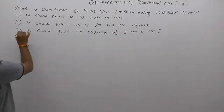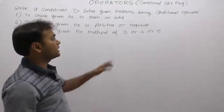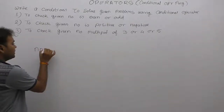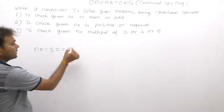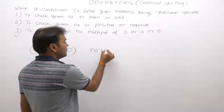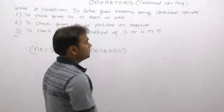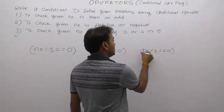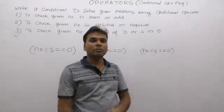Problem three: to check if a given number is a multiple of three or four or five. To check multiple of three — same as the previous condition — number modulo by three, if remainder is zero, the number is a multiple of three. Same as if any number divided by four gives result zero, then the number is a multiple of four. Same logic for five: if number modulo by five gives remainder zero, the number is a multiple of five.